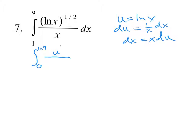That means I can rewrite this as u to the 1/2. I have an x down here, but dx is actually equal to x du. That's nice because these x's will cancel out, and so we're just doing the integral of u to the 1/2.